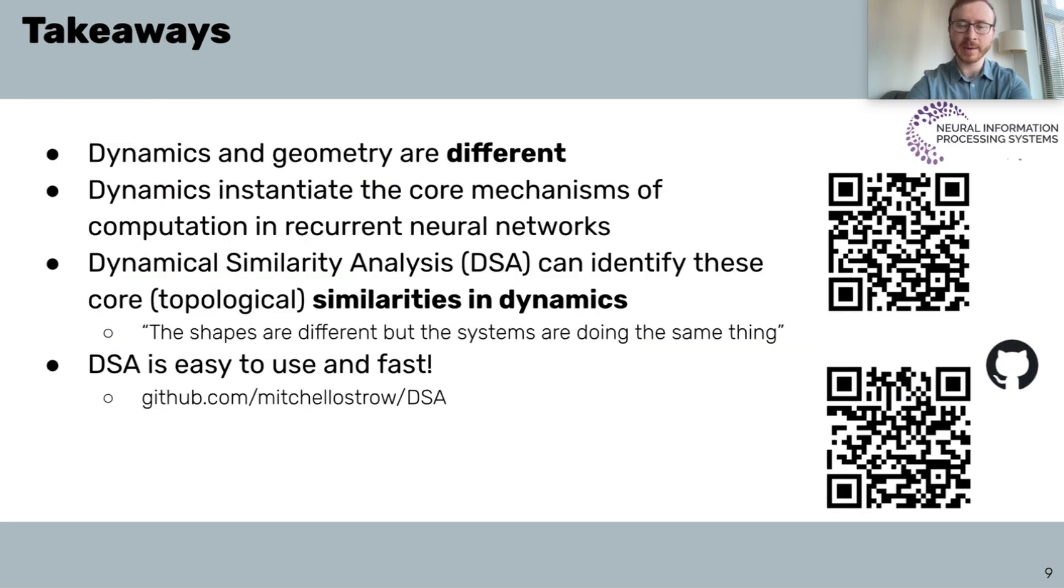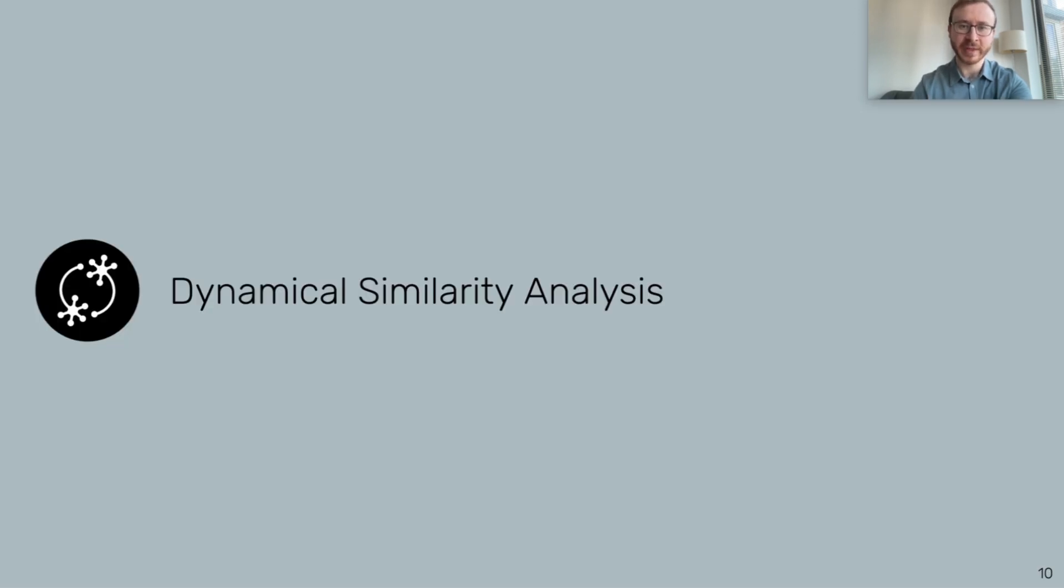So, just to wrap up, dynamics and geometry are two different aspects of recurrent neural networks, where dynamics instantiate the core mechanisms of computation. Our method, DSA, extends representational similarity analysis to capture core similarities in dynamics instead of geometry. We also have open source code that is easy to use and fast, and please check out the paper. Thank you.